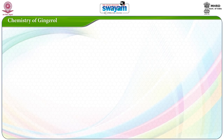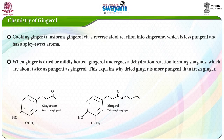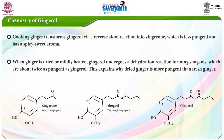Let us see the chemistry of gingerol. Cooking ginger transforms gingerol via a reverse aldol reaction into zingerone, which is less pungent and has a spicy sweet aroma. When ginger is dried or mildly heated, gingerol undergoes a dehydration reaction forming shogaols, which are about twice as pungent as gingerol. This explains why dried ginger is more pungent than fresh ginger.